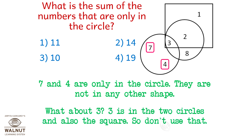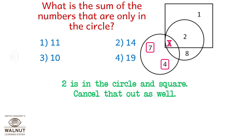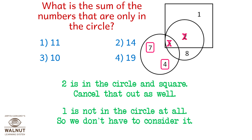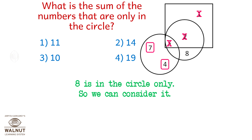What about three? Three is in the two circles and also the square, so don't use that. Two is in the circle and the square — cancel that out as well. One is not in the circle at all, so we don't have to consider it. Eight is in the circle only, so we can consider it.